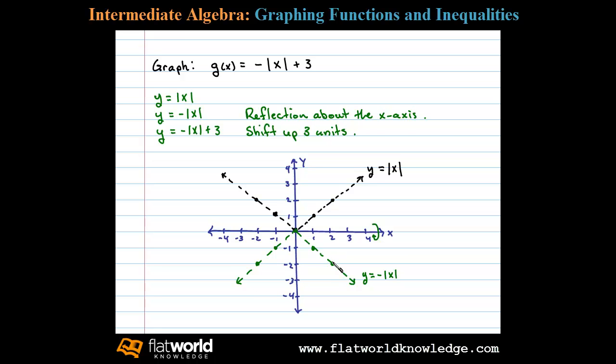Our final graph will be this graph shifted up 3 units, and here we have the graph of g(x) = -|x| + 3.